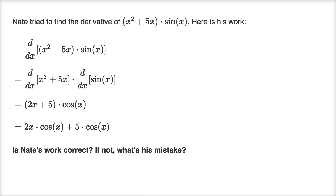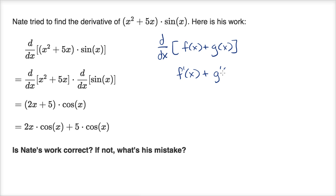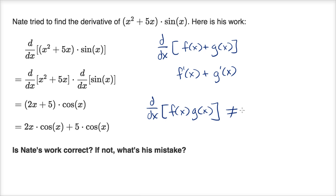You are probably familiar that if I take the derivative of the sum of two things — the derivative with respect to x of f of x plus g of x — that indeed is equal to the derivative of the first, f prime of x, plus the derivative of the second. But that is not true if we are dealing with the product of functions. The derivative with respect to x of f of x times g of x is not generally going to be just the product of the derivatives — not just f prime of x times g prime of x.